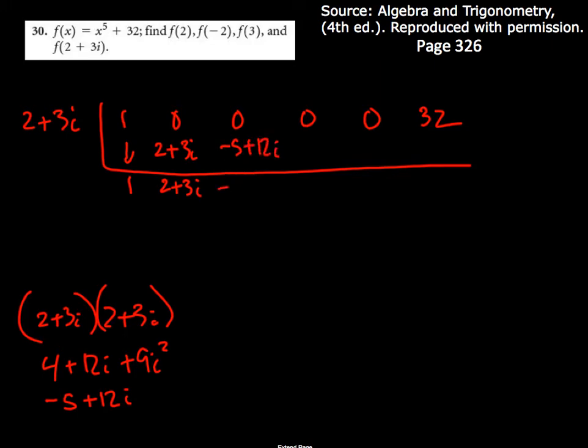So this times this is negative 5 plus 12i. Add negative 5 plus 12i. And then I've got to multiply this one by this one. So it's 2 plus 3i and I have to times that by negative 5 plus 12i.